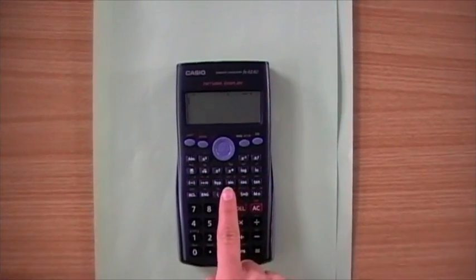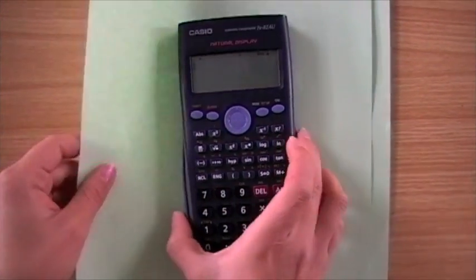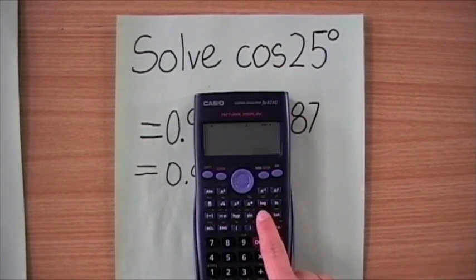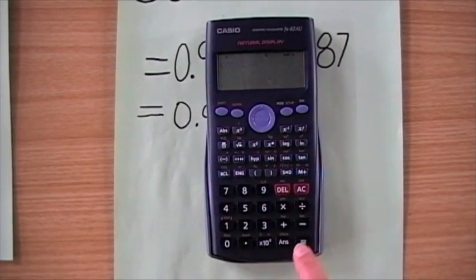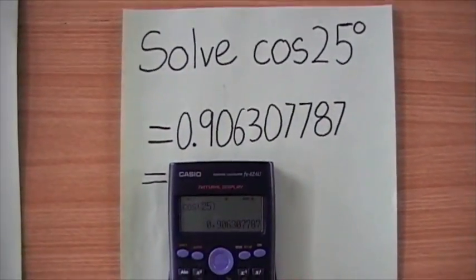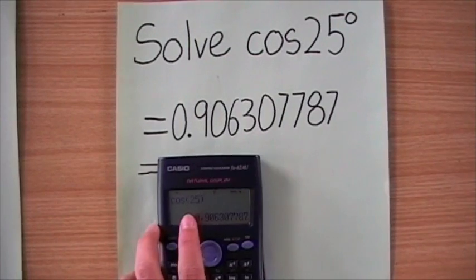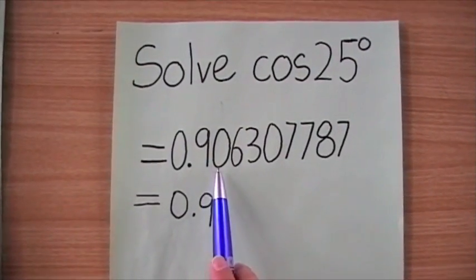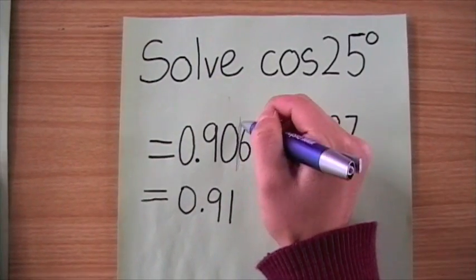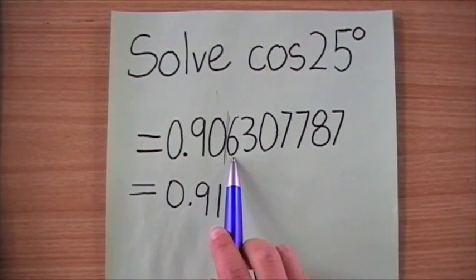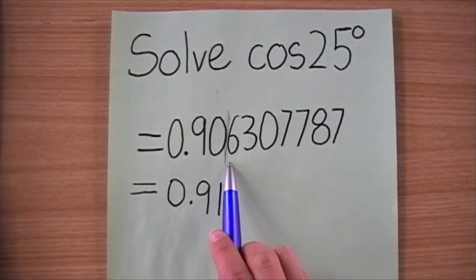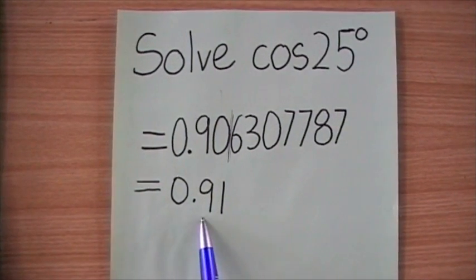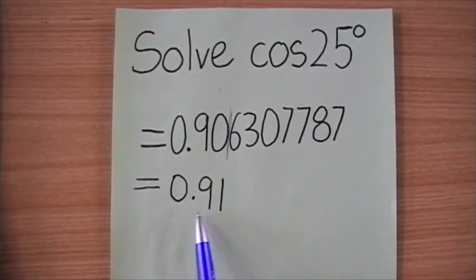Using a calculator, we are going to find out where sine, cosine, and tangent are located. For example, solve cosine 25 using a calculator and round to two decimal places. Press cos 25, close bracket, and press equals. You should get 0.906307787. To round off, draw a line after the second decimal digit. The digit 6 after the line is greater than 5, so the digit to its left — 0 — increases by 1. The final value of cosine 25 rounded to two decimal places equals 0.91.